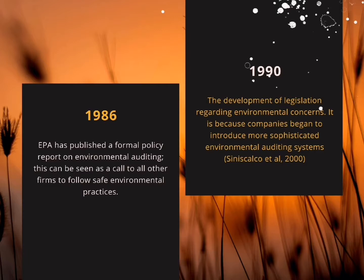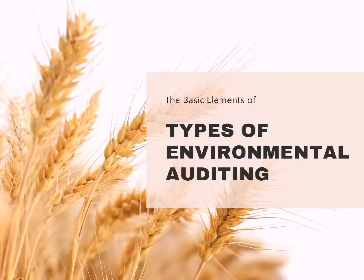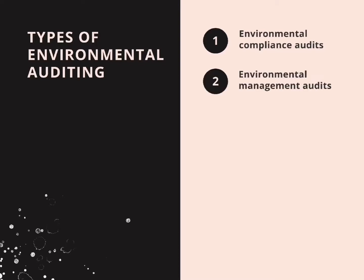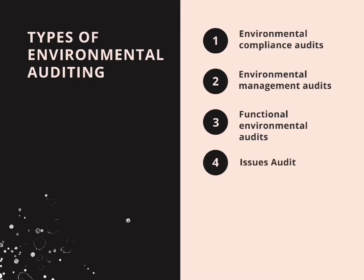Companies also began to introduce more sophisticated environmental auditing systems. For the types of environmental auditing, there are six main types: environmental compliance audits, environmental management audits, functional environmental audits, issues audits, site audits, and product or life cycle audits.